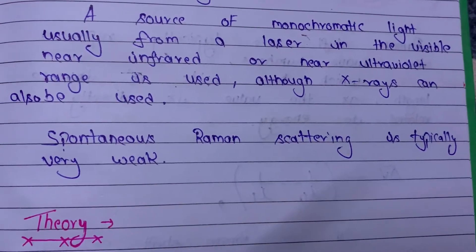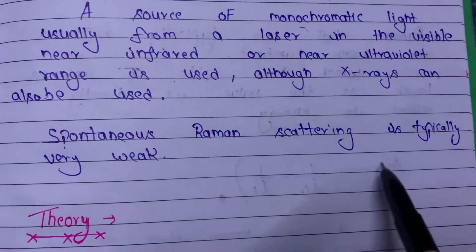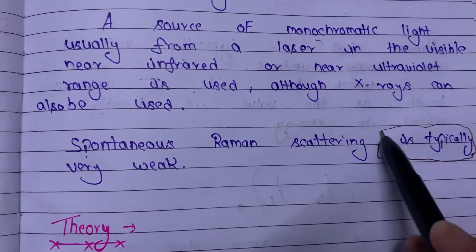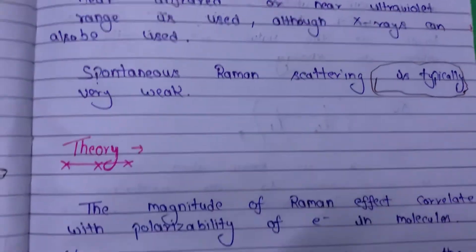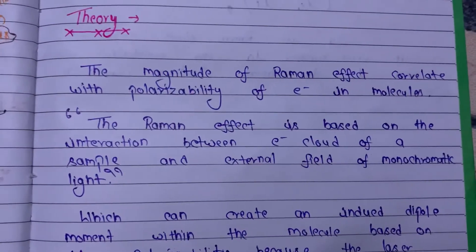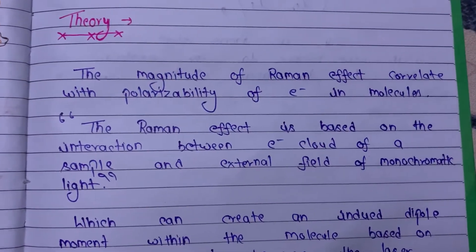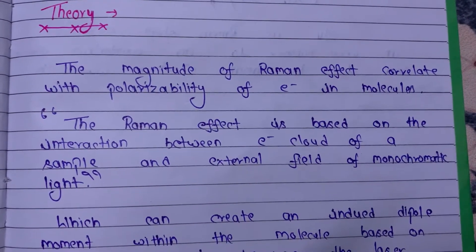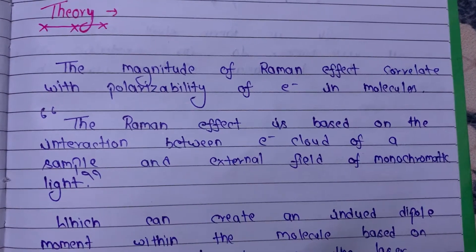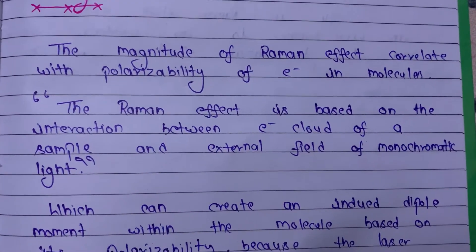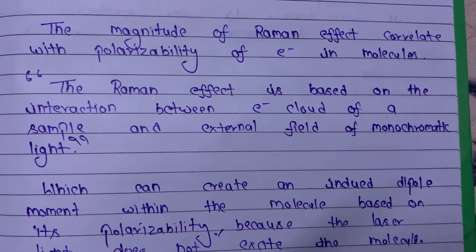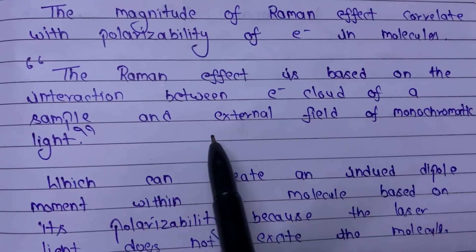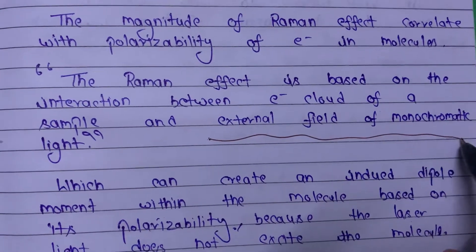Raman scattering is typically very weak, so it is not a strong signal. Regarding the theory, the magnitude of the Raman effect correlates with the polarizability of electron clouds in molecules. The Raman effect is based on the interaction between the electron cloud of a sample and the external field of monochromatic light.